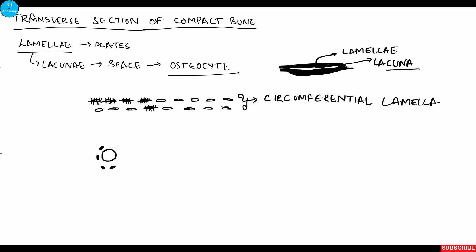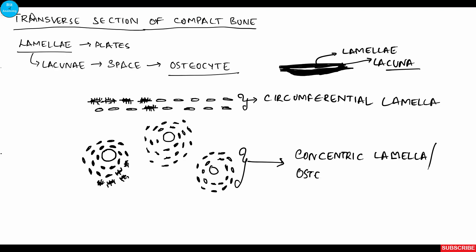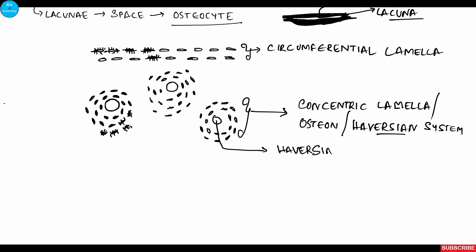Inside the circumferential lamellae we can see some concentrically arranged lacunae. The lamellar pattern is concentric here. This is called concentric lamellae or also called the osteon or Haversian system. Each osteon or Haversian system contains a central Haversian canal which consists of blood vessels, nerves and lymphatics which supplies nutrition to the lacunae and the osteocytes.